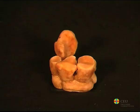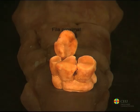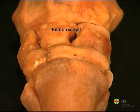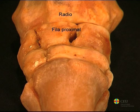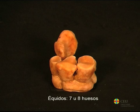The carpus is formed by a set of short bones that articulate in a complex way. Its disposition and the number of bones that compose it varies between species. But in domestic mammals, the bones form two clear rows: the proximal, which articulates with the radius and ulna, and the distal, which articulates with the metacarpal bones.